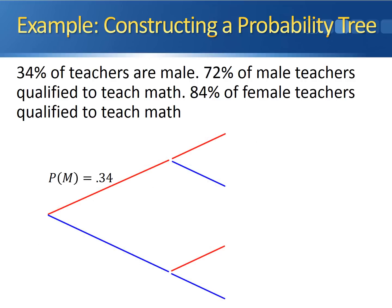Now we can put this information on the probability tree. Along the top branch, we put the marginal probability of being male, which is 0.34. Since our marginal probabilities have to add up to 1, the probability of being female is 1 minus 0.34, or 0.66. Now the marginal probabilities are set, and we can fill in the conditional probabilities.